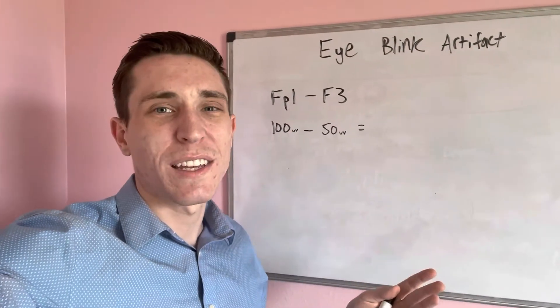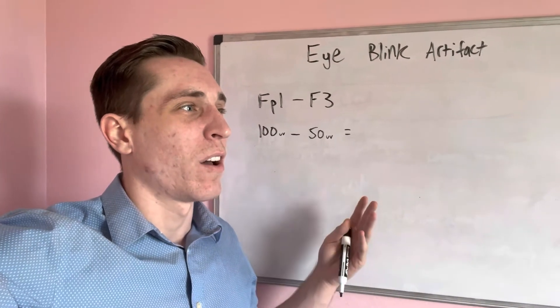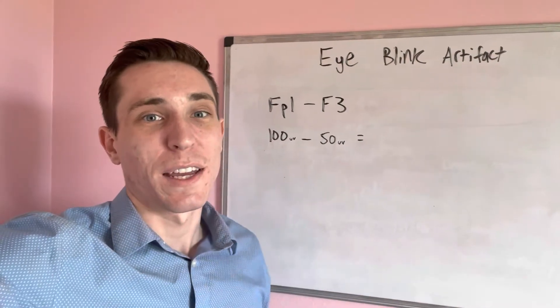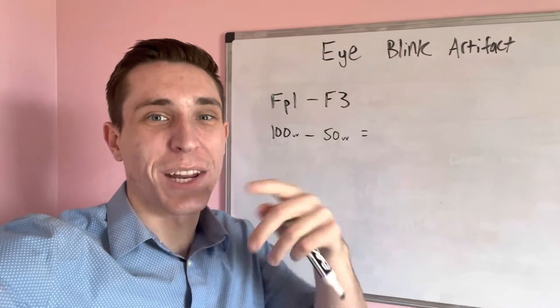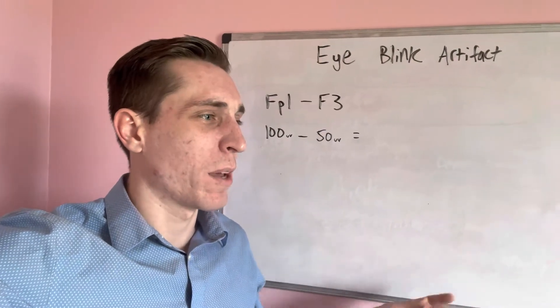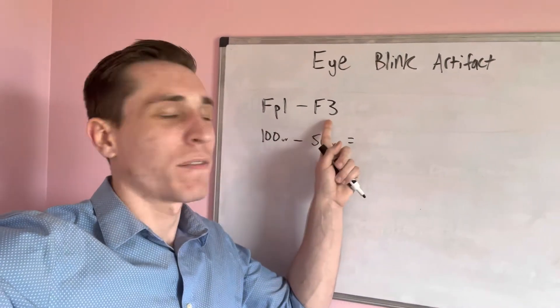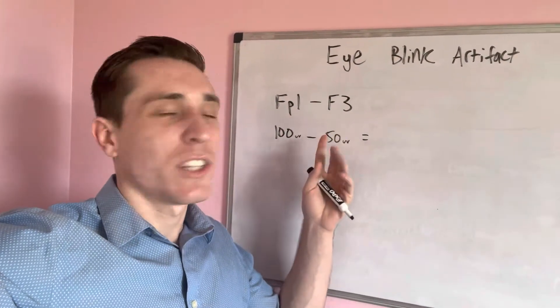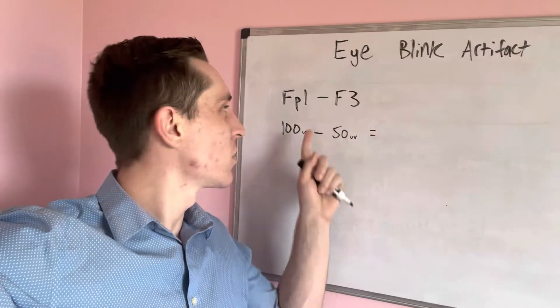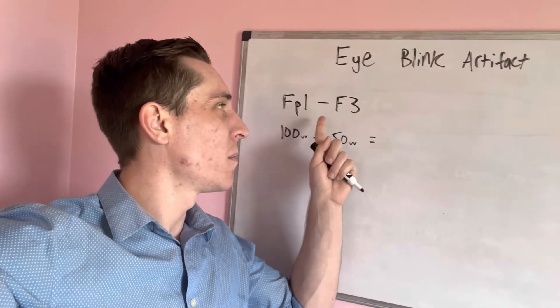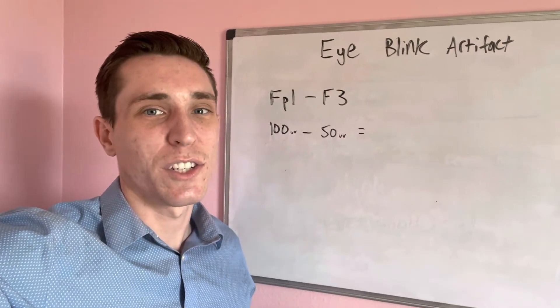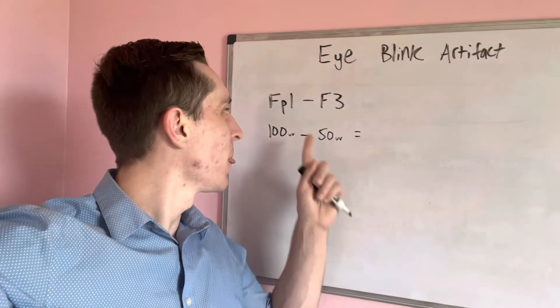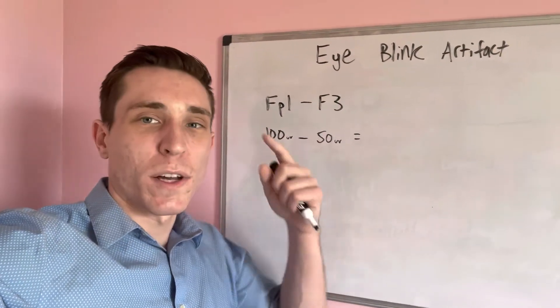What is the actual math behind why an eye blink artifact is shaped the way it is? Why is it shaped like a V and not like the N shape I was seeing on my software? Why are they upside down? Let's take an example of FP1 to F3. Say you're doing a longitudinal bipolar montage. EEG shows the difference between two channels. So in this case, we're going to be looking at FP1 minus F3.